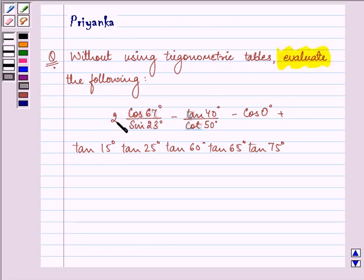Now here we are given 2 cos 67° upon sin 23° minus tan 40° upon cot 50° minus cos 0° plus tan 15° into tan 25° into tan 60° into tan 65° into tan 75°.